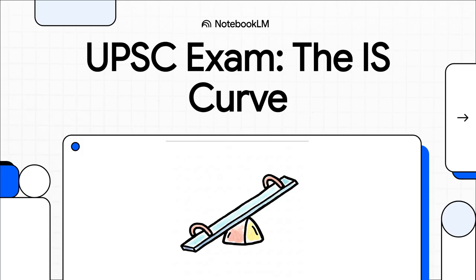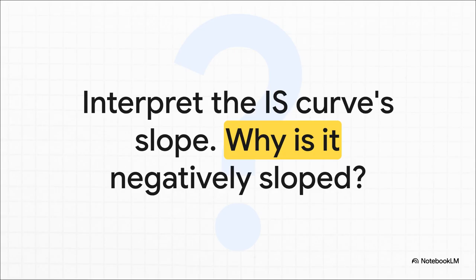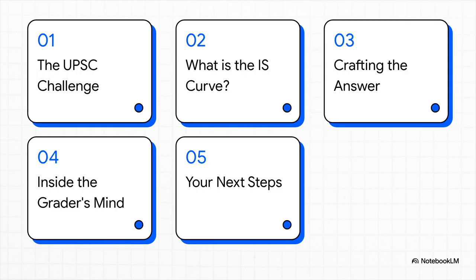So let's get right into it. Here's our challenge for today. It looks a little dense, a little intimidating, but don't worry — we're going to unpack this piece by piece in simple, logical steps. By the end of this, you'll know exactly how to put together a killer answer. We'll start with the big question, then get to the bottom of what the IS curve even is, figure out how to write the perfect answer, peek inside the mind of the person grading it, and then I'll show you what to look at next.